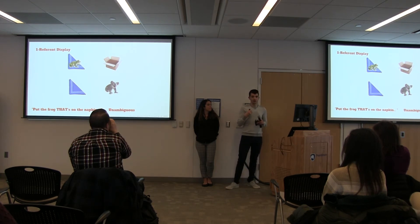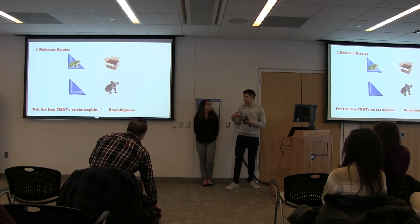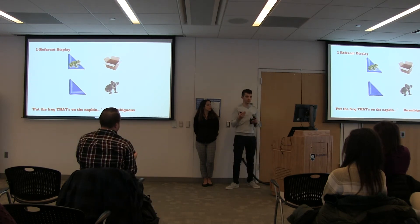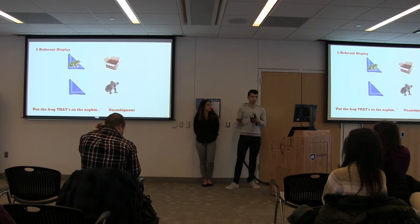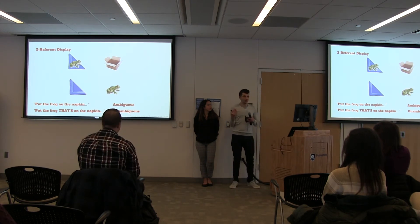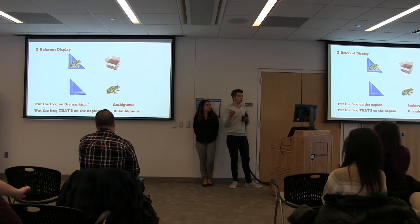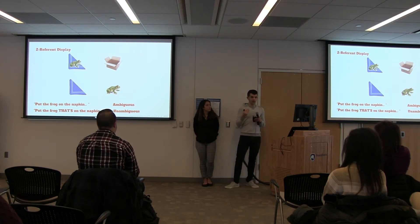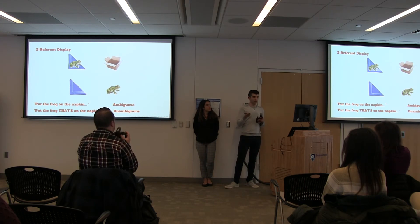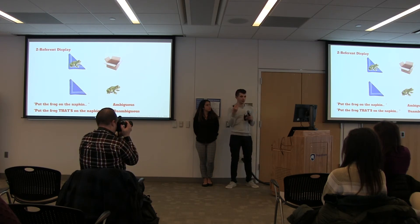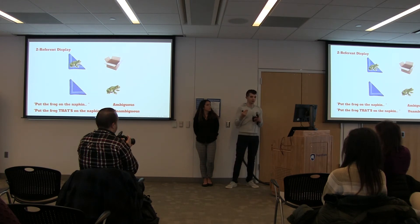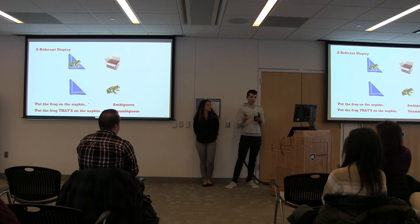When we use the phrase 'put the frog that's on the napkin,' that's an unambiguous phrase — 'that's on the napkin' is very clearly indicating which frog is being talked about. In our two-reference display, there are two frogs. So while 'put the frog on the napkin' is still ambiguous, the display limits the interpretation. Either way, 'put the frog on the napkin' should indicate the frog that's already on the napkin. And 'put the frog that's on the napkin' is still unambiguous — both should indicate the frog already on the napkin, interpreted as the modifier.